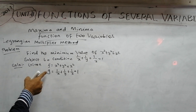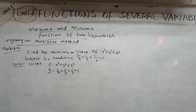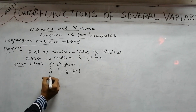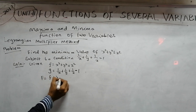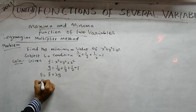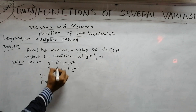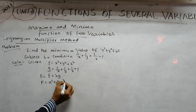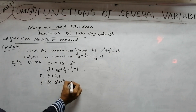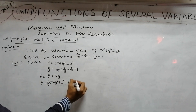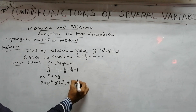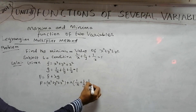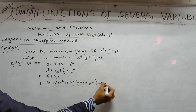Now, small f is x² + y² + z², and small g is 1/x + 1/y + 1/z − 1. This is the auxiliary function. Capital F equals small f plus lambda times g, so capital F = x² + y² + z² + λ(1/x + 1/y + 1/z − 1). This is equation number 1.